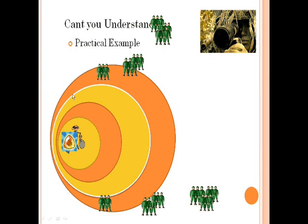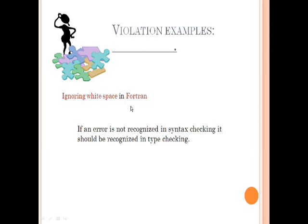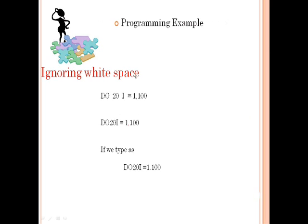Now I am going to show you a programming example: ignoring white space in Fortran. Fortran ignores white space. This is a do loop in Fortran — this is the actual method to define a do loop in Fortran. But if you type it while ignoring the white space, it is also considered correct by the compiler, because the tokens are in the correct place. Therefore, the compiler thinks this is correct.